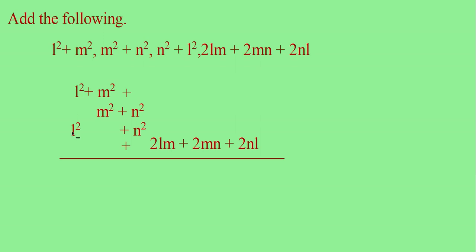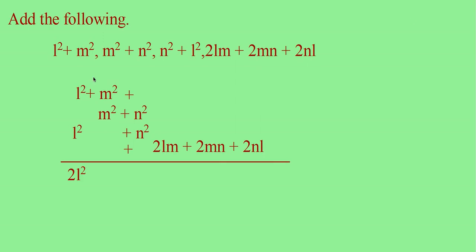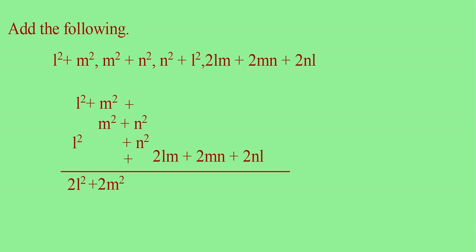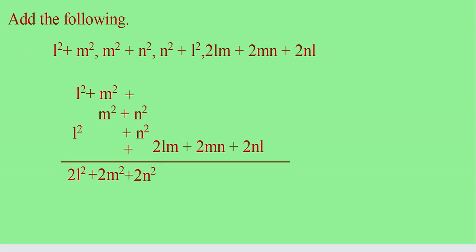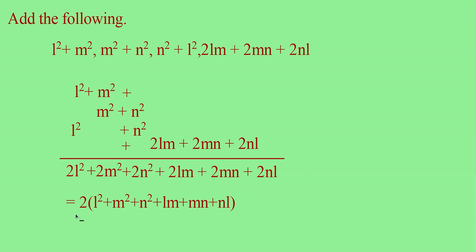L squared plus L squared: 1 plus 1 equals 2, so write 2L squared. Similarly, M squared plus M squared gives 2M squared, and N squared plus N squared gives 2N squared. The remaining expressions 2LM plus 2MN plus 2NL, write as is. The answer is 2L squared plus 2M squared plus 2N squared plus 2LM plus 2MN plus 2NL. Since 2 is common in all terms, we can factor it out: the answer is 2 times the quantity L squared plus M squared plus N squared plus LM plus MN plus NL.